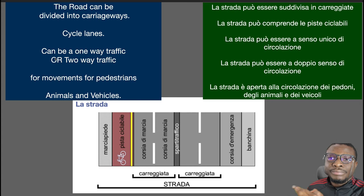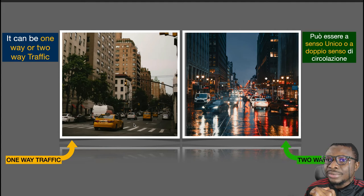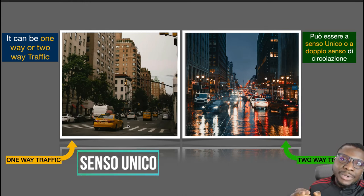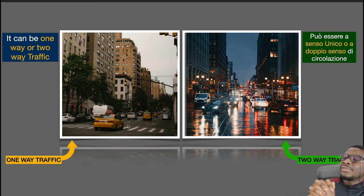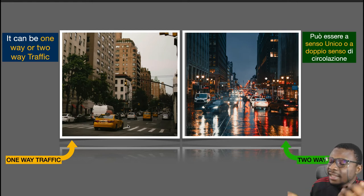Roads can also be one-way or two-way traffic. This is a one-way traffic where you can see all the vehicles going in the same direction. In Italian it's called 'senso unico'. The literal meaning of 'senso unico' is something like 'one direction' or 'one sense'.